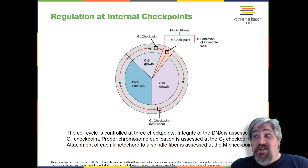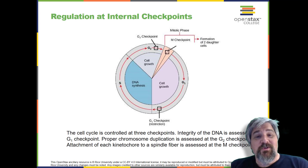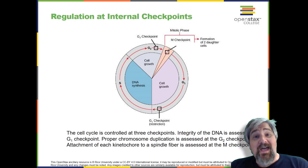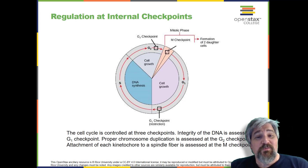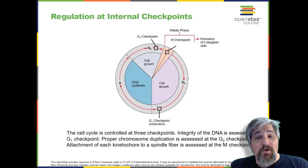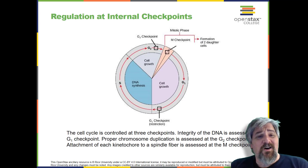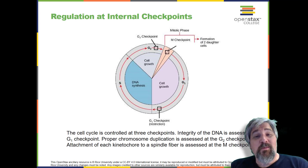The G2 checkpoint bars the entry to the mitotic phase if certain conditions are not met. As in the G1 checkpoint, cell size and protein reserves are assessed. However, the most important role of the G2 checkpoint is to ensure that all the chromosomes have been replicated and that the replicated DNA is not damaged.